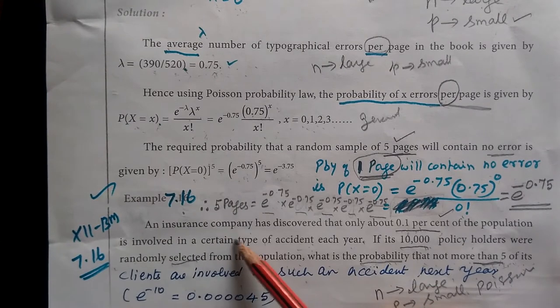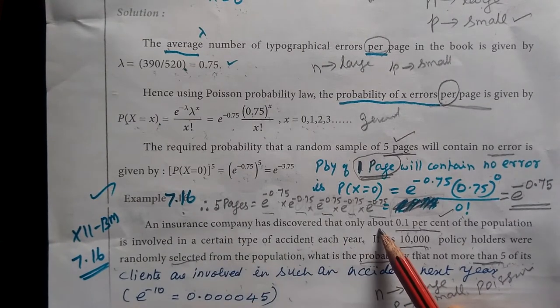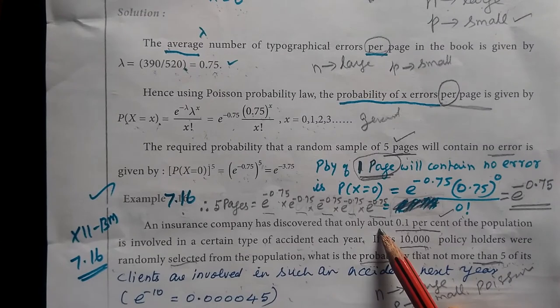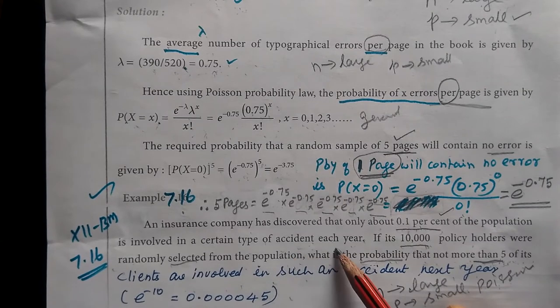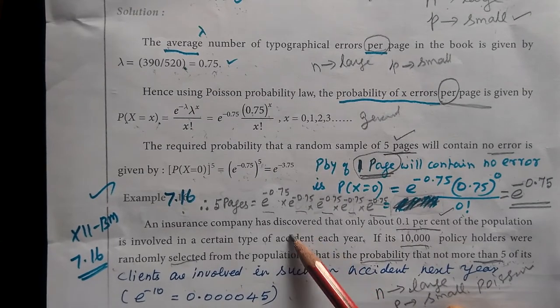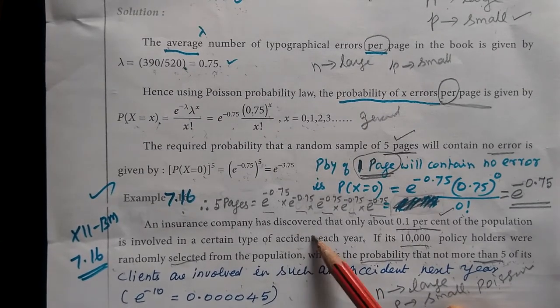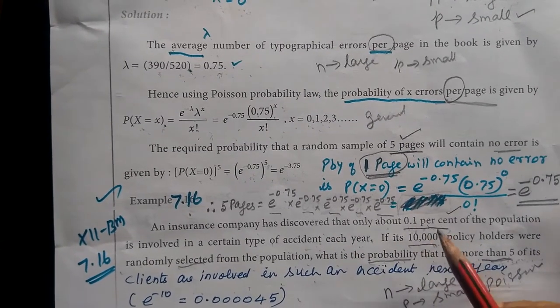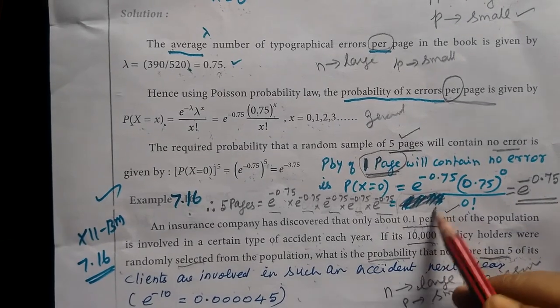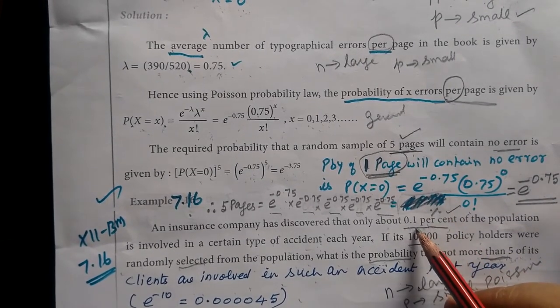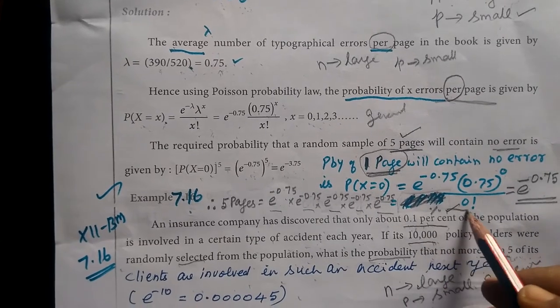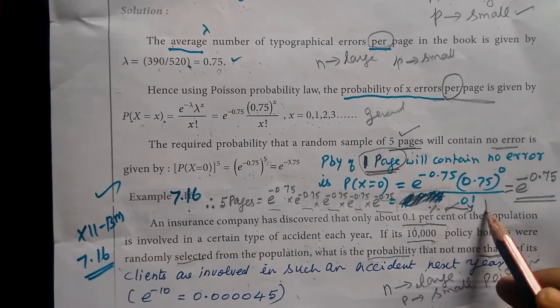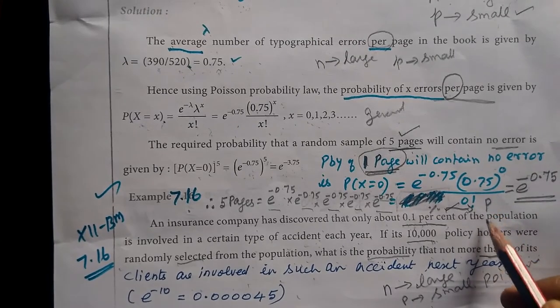An insurance company has discovered that only about 0.1% of the population is involved in a certain type of accident each year.